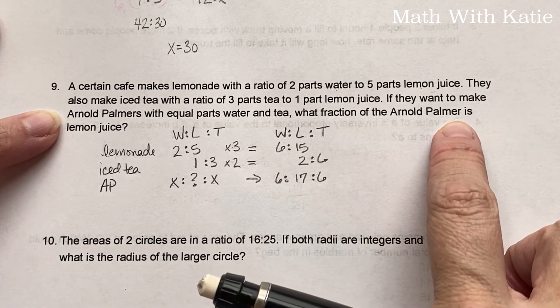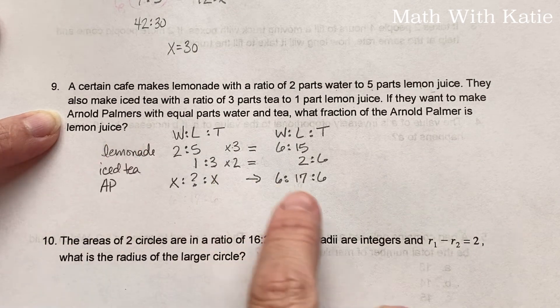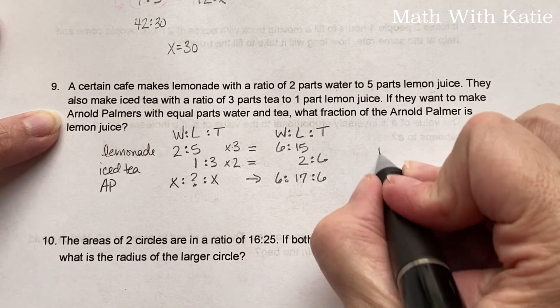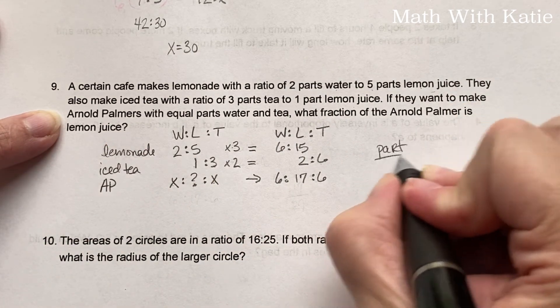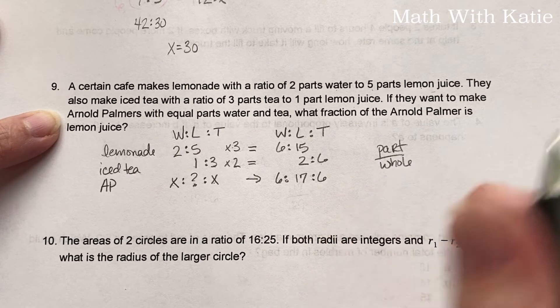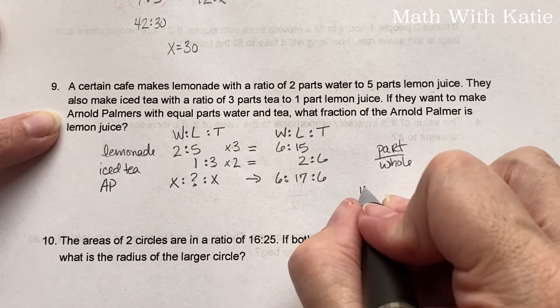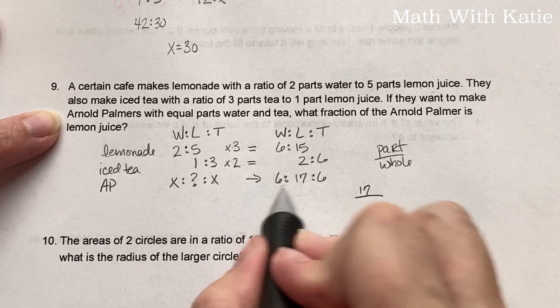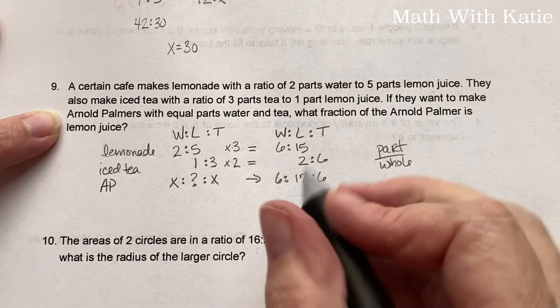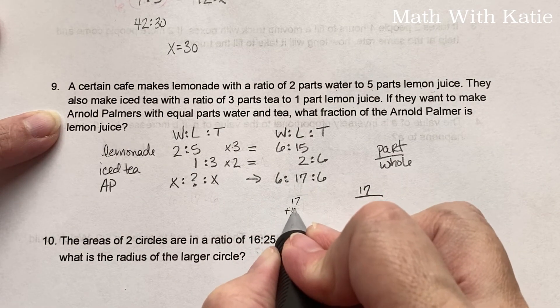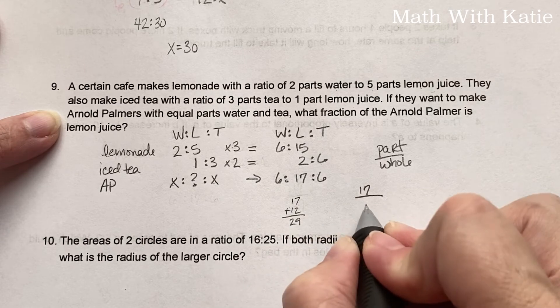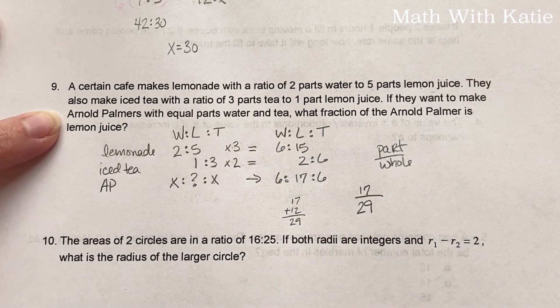Now what fraction of the Arnold Palmer is lemon juice? Remember it's part over whole. So the part that's lemon juice is 17 and our whole is 17 plus 12, which is 29. So 17 over 29.